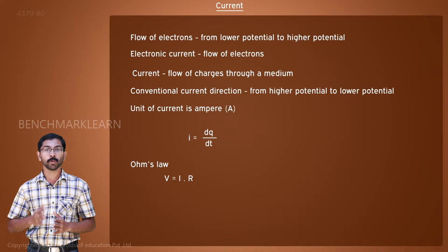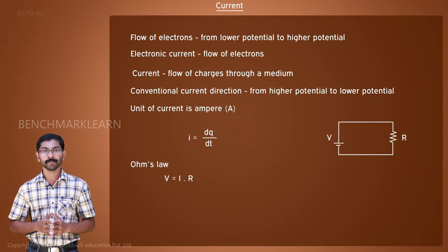When an electric source, like a battery, provides voltage across a resistor, then a current flows through it. Here, voltage is the cause and current is the effect.